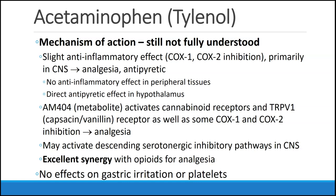There may also be an effect on serotonergic inhibitory pathways in the CNS. Altogether, acetaminophen is an effective analgesic drug with wonderful synergy with opioids, which is why we see combination drugs like Percocet — oxycodone plus acetaminophen, where the 'CET' stands for acetaminophen. Most notably, acetaminophen has no effect on gastric irritation or platelets, which is something we associate with all the other NSAIDs.